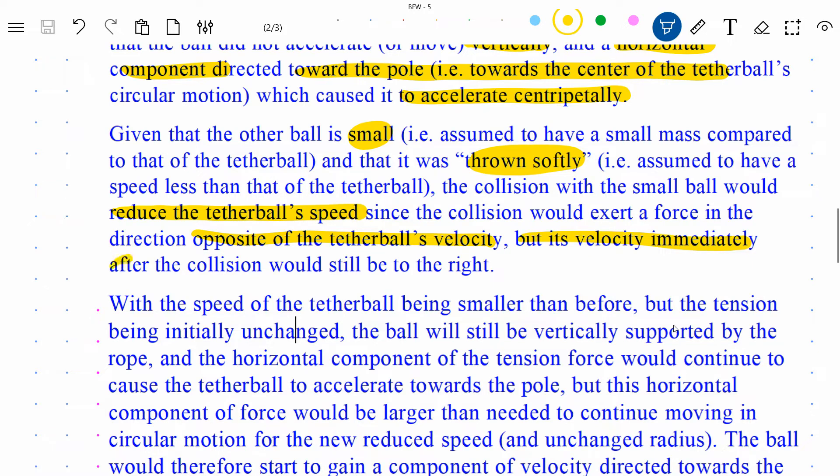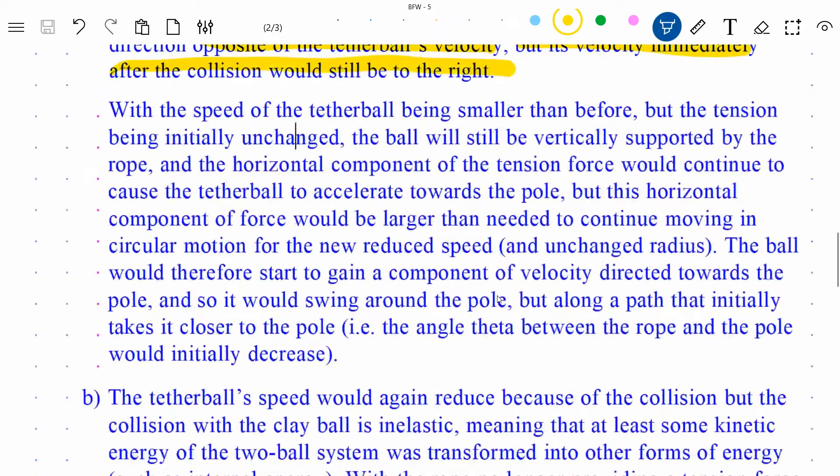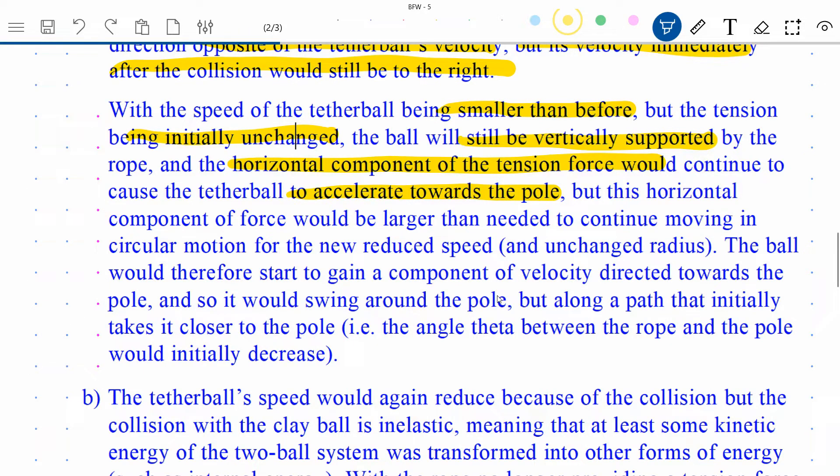So, since the collision would exert a force on it in the direction opposite of the tether ball's velocity, it's going to slow it down, but again I'm assuming not going so far as to stop or reverse its motion. In fact, I say that: its velocity immediately after the collision would still be to the right. Now, with the speed of the tether ball being smaller than before, but the tension being initially unchanged because the tension is not going to be affected by that collision immediately—it won't be affected until the ball starts to move in some different way—so the ball will still be vertically supported by the rope, and the horizontal component of tension would continue to cause the ball to accelerate towards the pole.